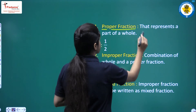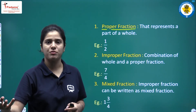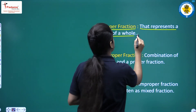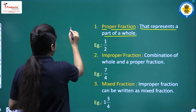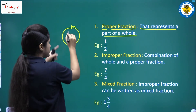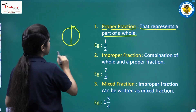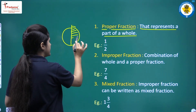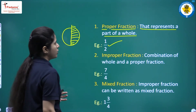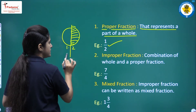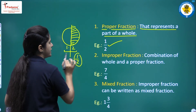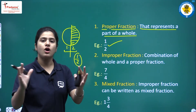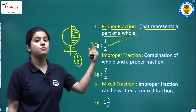A proper fraction can be represented in the form of p upon q, and it represents a part of a whole. For example, if I have an apple and half of it is spoiled, then if I'm asked what part of the apple is spoiled, I'll say one upon two. Out of the two parts, one part is spoiled. So this is what a proper fraction is — a part of a whole.